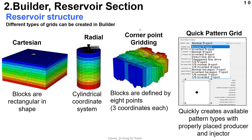Now we continue with the corner-point grid. The corner-point grid is usually used for real field data. It can represent the geometry as defined by each point in the reservoir, and at each point there are three coordinates. In this simulation course, we use this grid type because we are using real field data for simulation purposes.